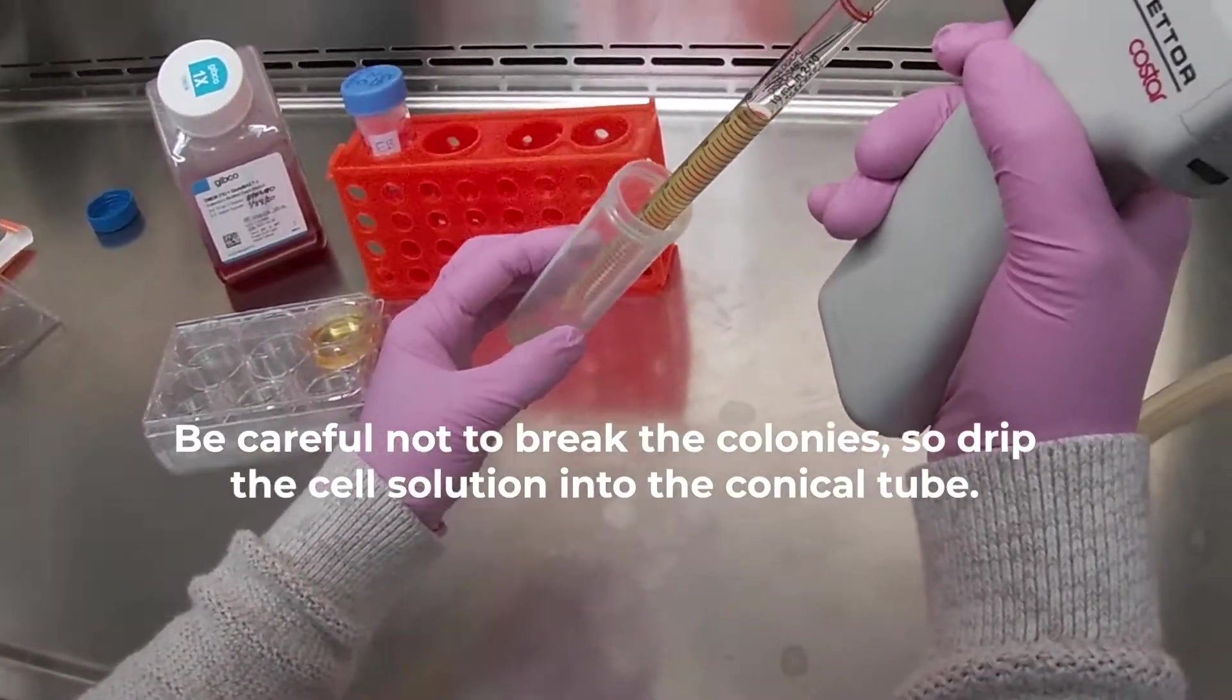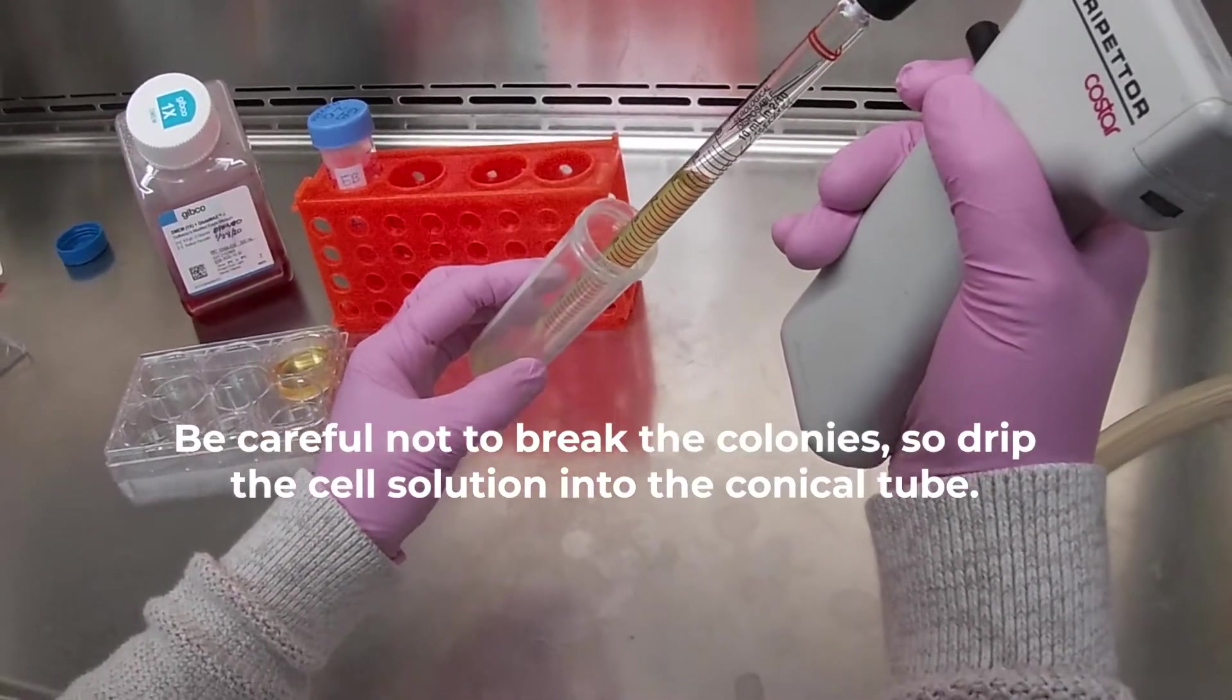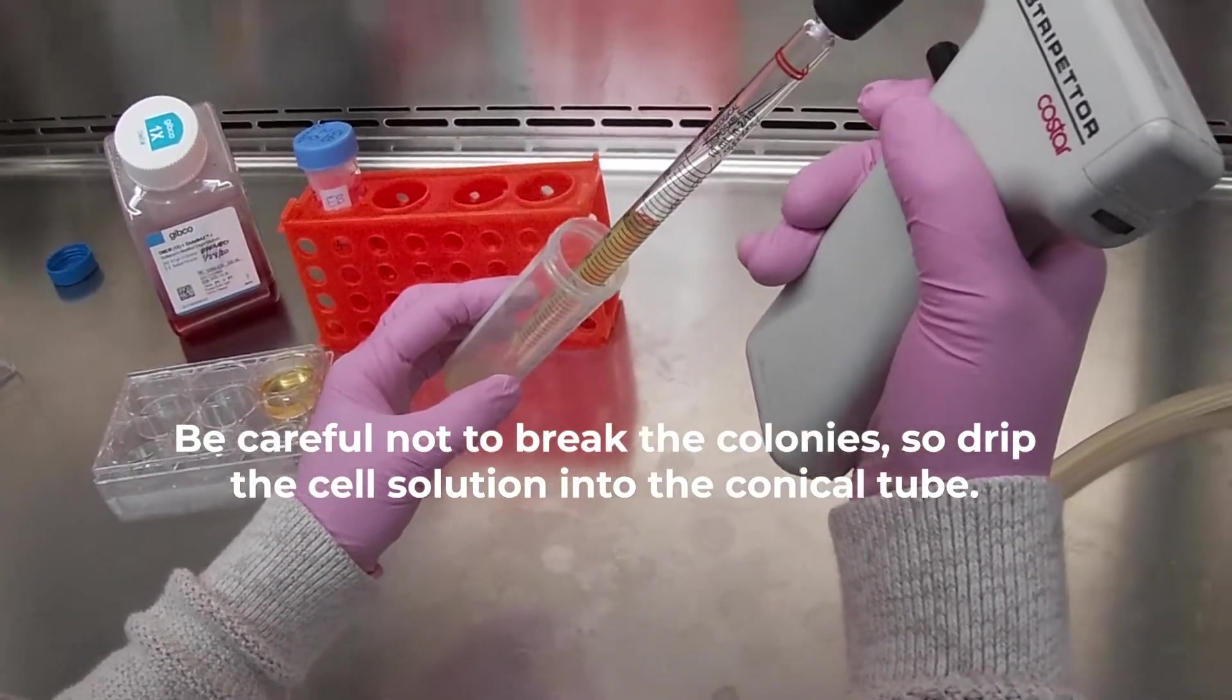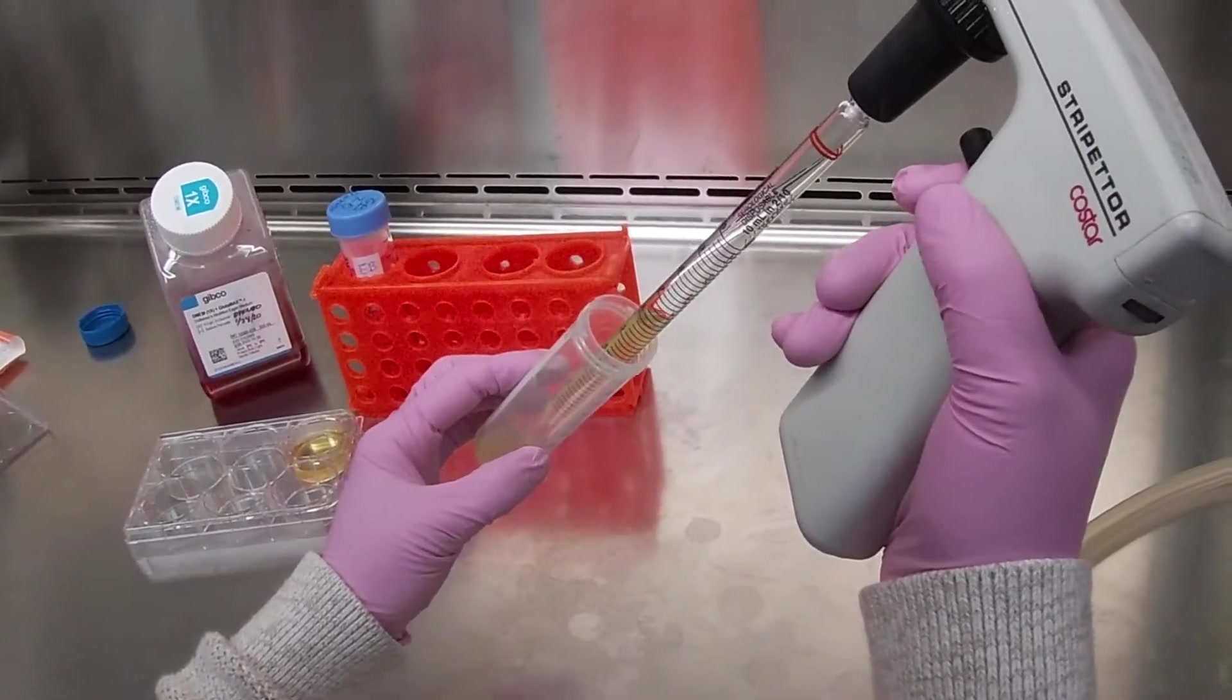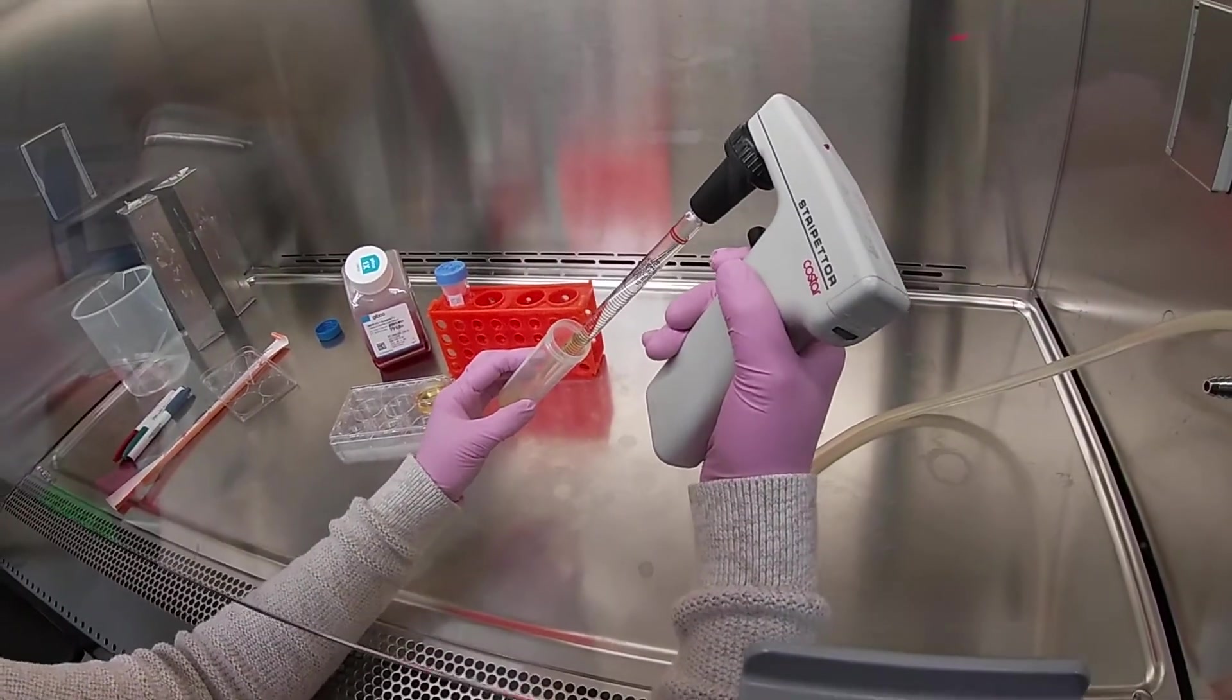Add them very carefully to the 15mL conical tube. Make sure that the setting for the pipette gun is set to really low so that you could dispense it at a drip.